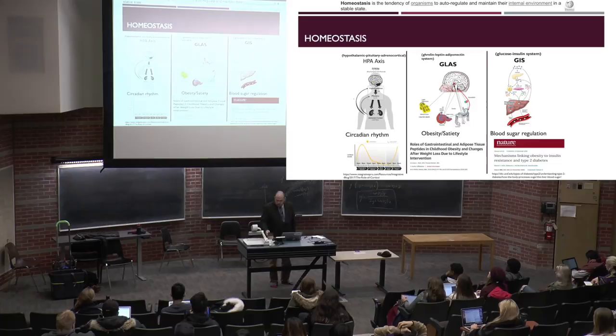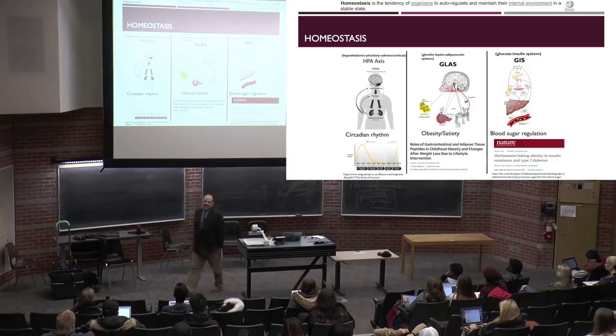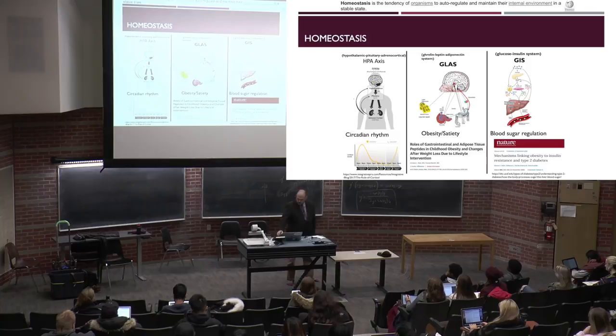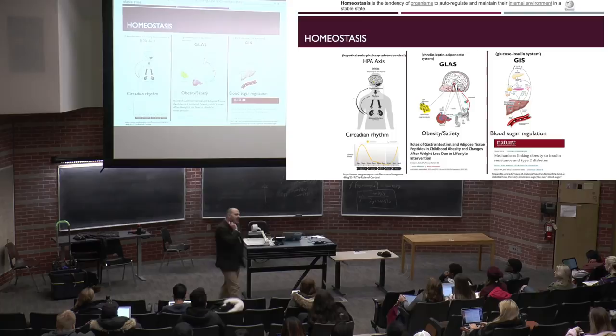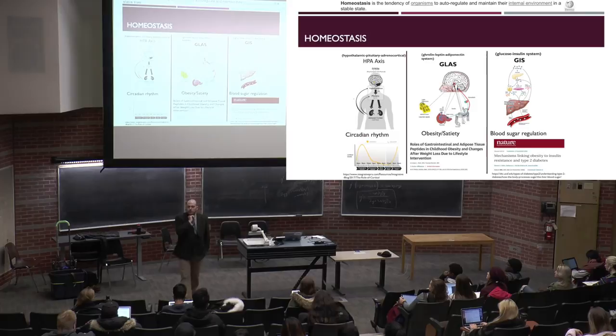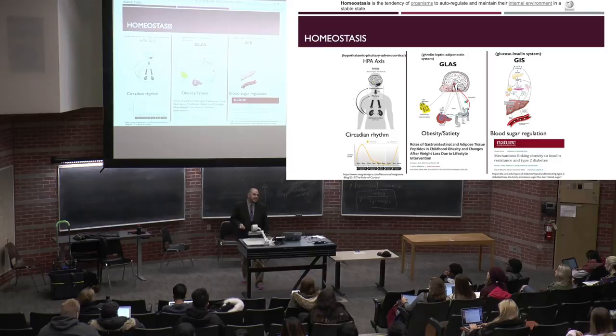Going into homeostasis, we've already talked about the ghrelin-leptin system for satiety and obesity. What we're going to look at today is blood sugar regulation and the concept of the glycemic index. All foods, especially foods high in carbohydrates, have a glycemic index — a measure of how much blood glucose changes in response to consuming a food.